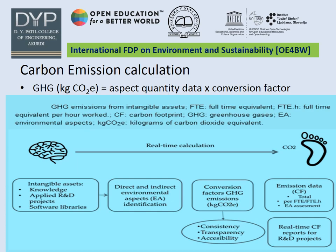Now, how is carbon emission calculated? It is calculated by multiplying aspect quantity data by a conversion factor. This goes through intangible assets to direct and indirect environmental aspects identification, then conversion factor, greenhouse gases emission, and finally emission data.